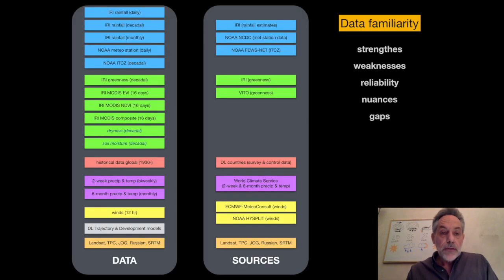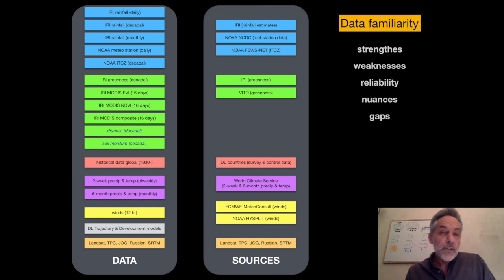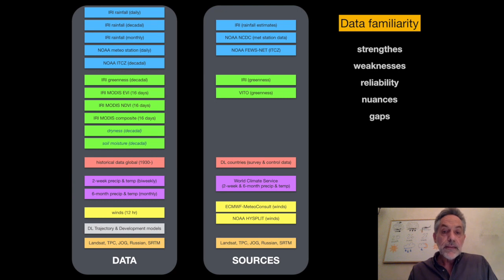When we're talking about data, we use a lot of data in DLIS coming from different sources. Over time, when you use this data day in and day out, you start to become very familiar with it — you start to understand its strengths, its weaknesses, how reliable it is. There are very small nuances in the data, and of course huge gaps. But the more familiar you are with the data, the better you can use it to make more precise predictions.